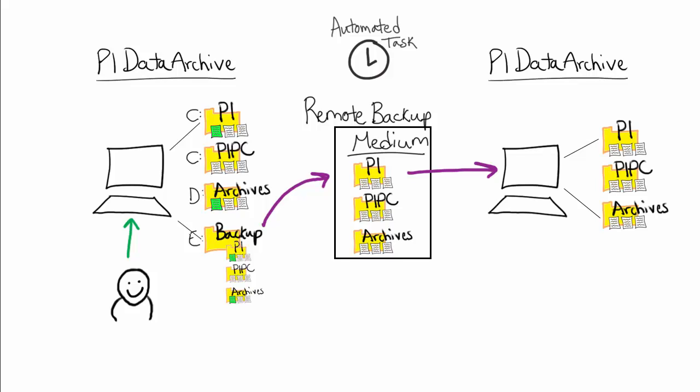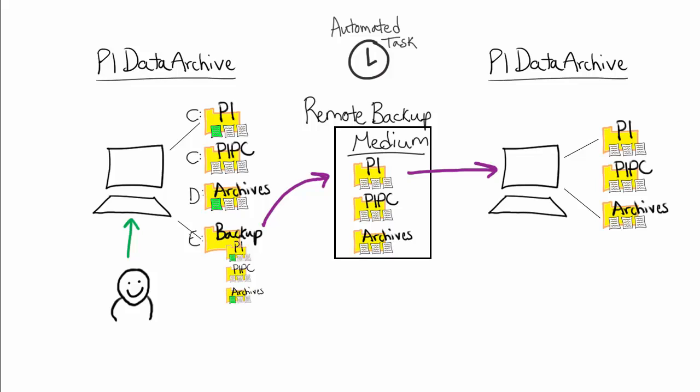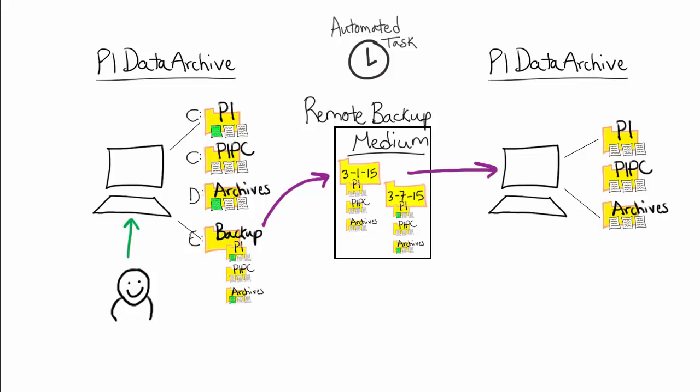When it comes to your remote backup, you have two choices for its configuration if using the script provided with the PI Data Archive to perform the remote backup. You can have the same backup directory copied every time, having it overwrite itself, thus only keeping the most recent backup of your PI Data Archive. Or you can create what is known as a repository of backups where you keep backups from different points in time. Here, for instance, I have a backup from March 1, 2015, as well as a backup from March 7, 2015.